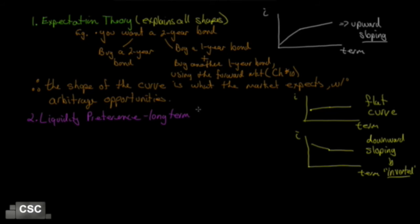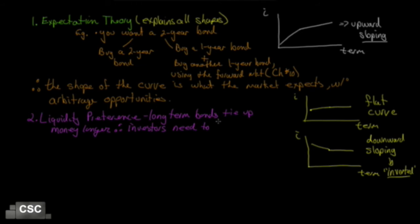Another theory of why the curve looks the way it does is liquidity preference. Liquidity preference states that if I'm going to lend you money for 10 years as opposed to one year and lock my money up for 10 years, I want to be paid more for that. Long-term bonds tie up money longer, so I need to be compensated. Also, if I lend you money for six months I only have to worry for six months, but if I lend for 10 years there are 10 years in which you can default — more time for things to go wrong. The risk of a long-term bond is higher than that of a short-term bond.